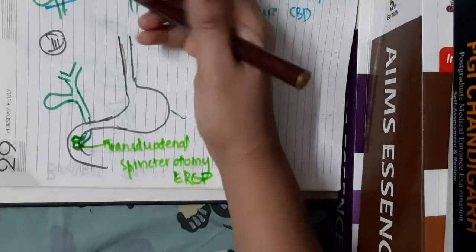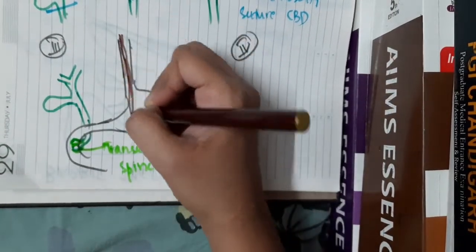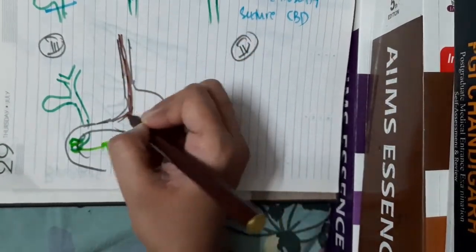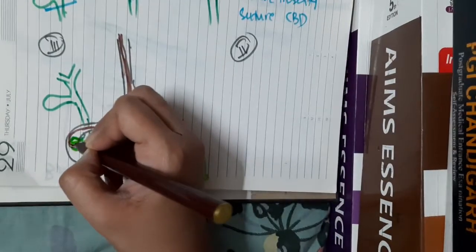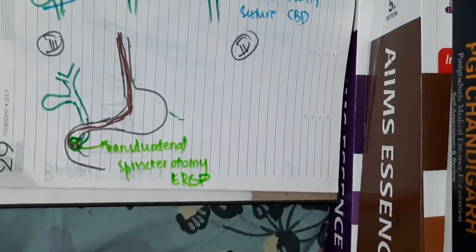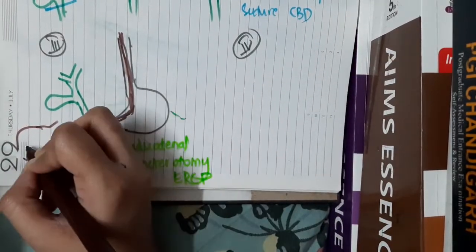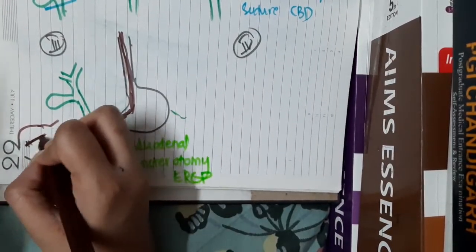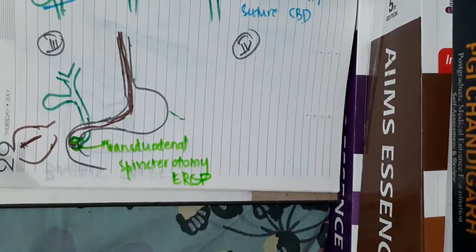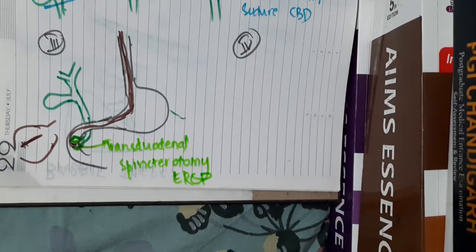In ERCP, an endoscope is introduced through the esophagus into the stomach and then to the duodenum. A small incision is made over the dilated intraduodenal segment so that drainage occurs easily — this is the transduodenal sphincterotomy.